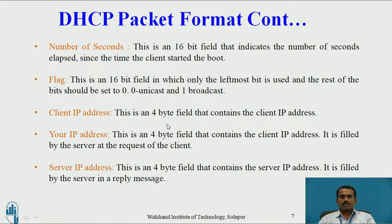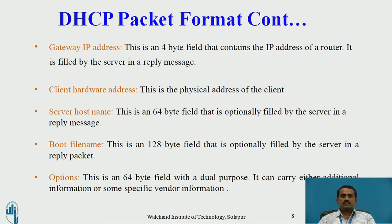Client IP address is a 4-byte field that contains the client IP address. It is filled by the server at the request of the client. Next is server IP address — a 4-byte field that contains the server IP address, filled by the server in a reply message. Gateway IP address is a 4-byte field that contains the IP address of the router, filled by the server in a reply. If the client is in one LAN and the server is in another LAN, we use the gateway IP address to convert between unicast and broadcast.